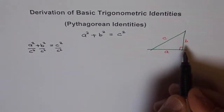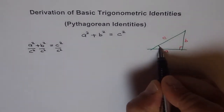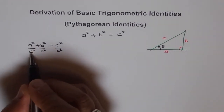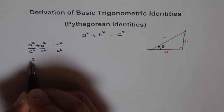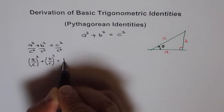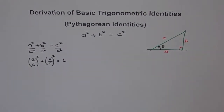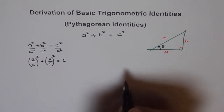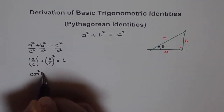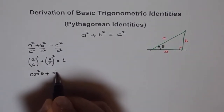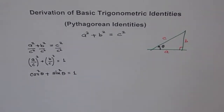Now, what is A over C? Let's say this is our angle theta. I can write this as (A over C) squared plus (B over C) squared equals 1, since C squared over C squared cancels to give 1. Now, A over C is the adjacent side over the hypotenuse, which gives us cos theta. And B over C is the opposite side over the hypotenuse, which is sin theta. So we get cos squared theta plus sin squared theta equals 1. That is one of our basic trigonometric identities.